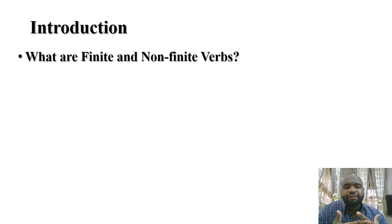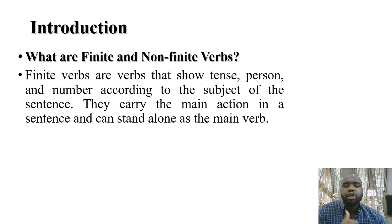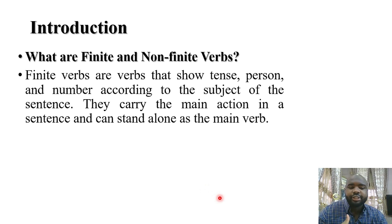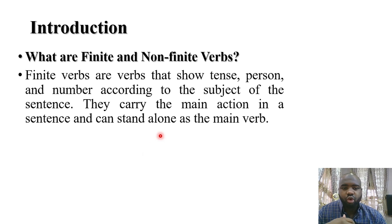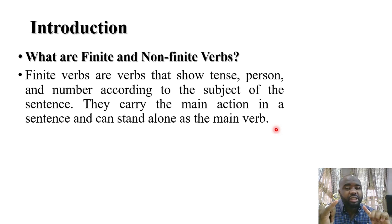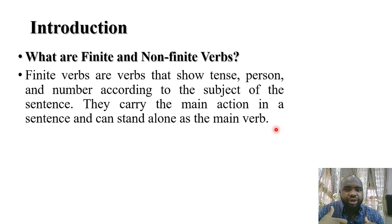Introduction. Let's define finite and non-finite verbs. A finite verb is a verb that shows tense, person, and number according to the subject of the sentence, which indicates the time frame of the verb — whether it's present, past, or future tense. It also shows number, meaning it agrees with the subject, whether first person, second person, or third person, singular or plural.